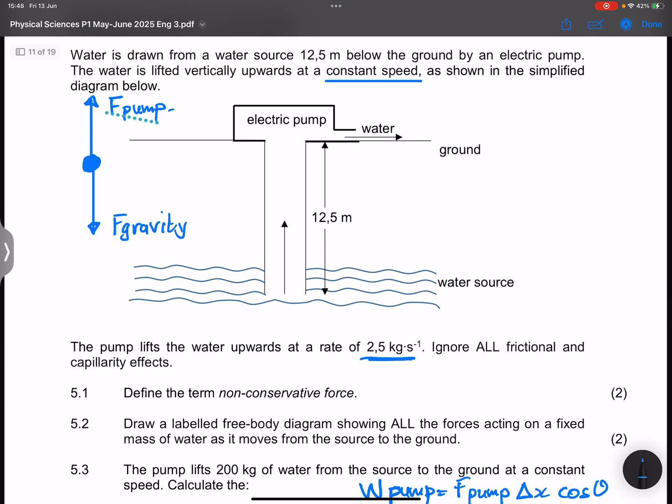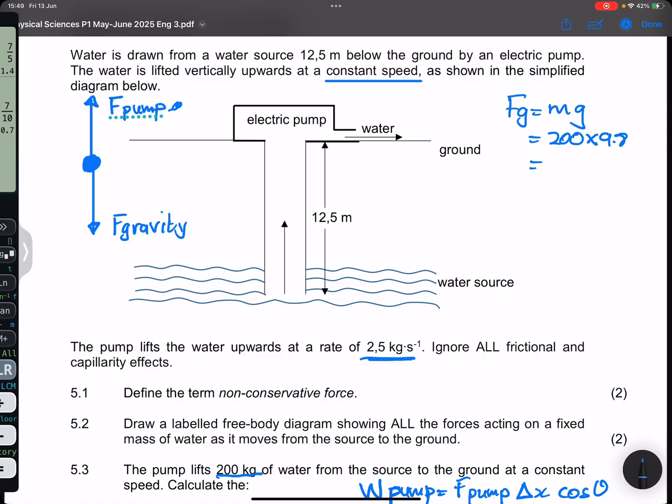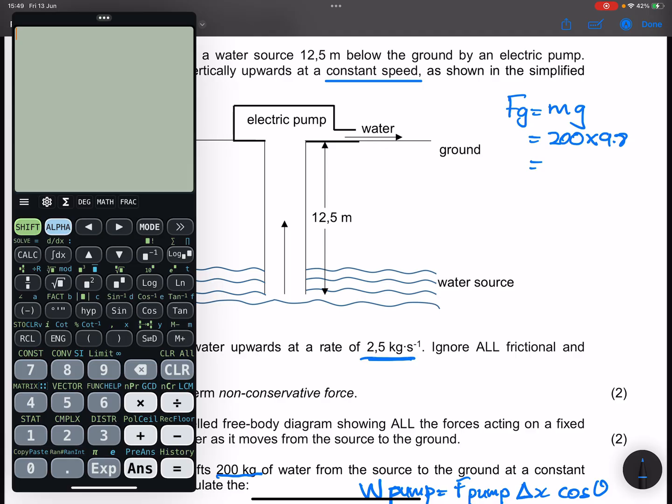Now the force of the pump, we did say that this force here, even though it's not given, would be equal to gravitational force. So how much water are we lifting? We're lifting 200 kilograms. So what would be gravitational force in that case? That would be mass times G. That's 200 times 9.8. And I get 1960 newtons.